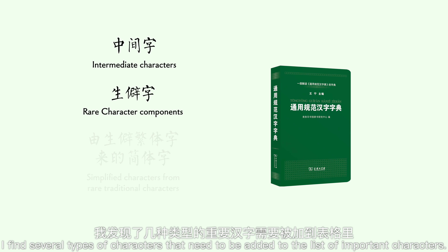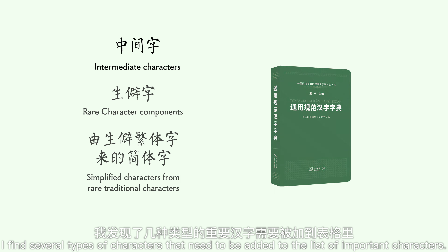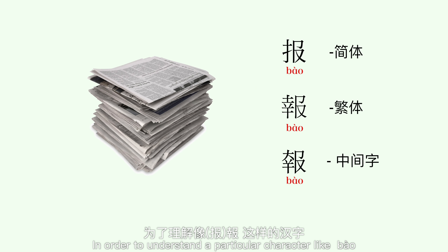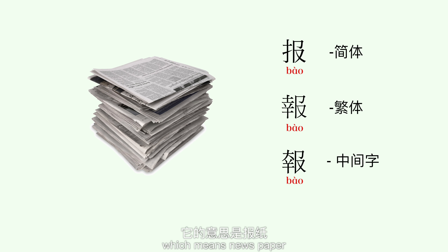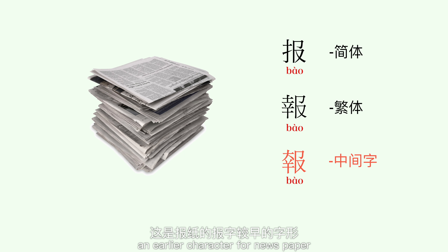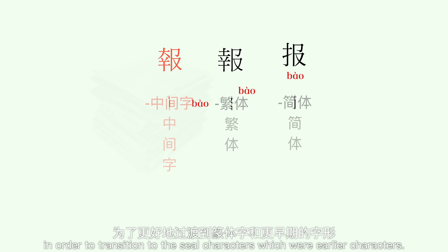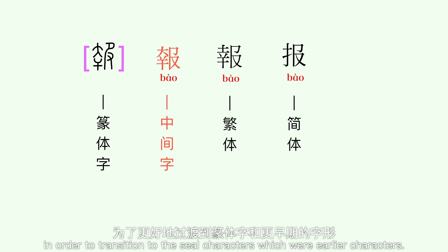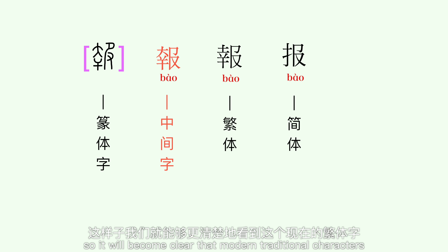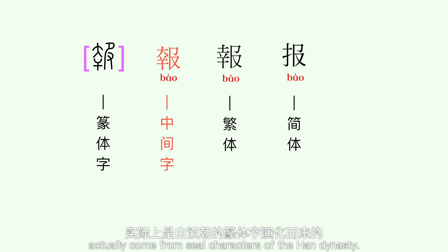I find several types of characters that need to be added to the list of important characters. Intermediate characters: in order to understand a particular character like Bao, which means newspaper, we may need to understand some earlier Kai-type characters for newspapers. In order to transition to the seal characters, which were earlier characters, we need to examine step-by-step those older forms of traditional characters, so it will become clear that modern traditional characters actually come from seal characters of the Han dynasty.